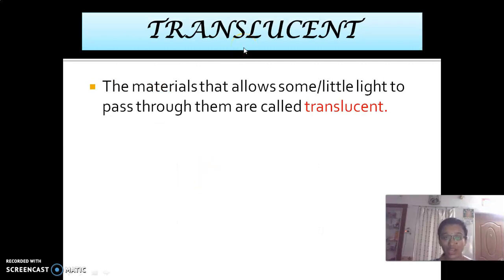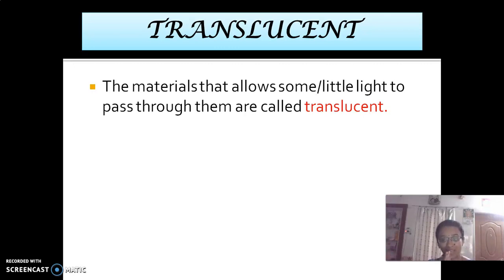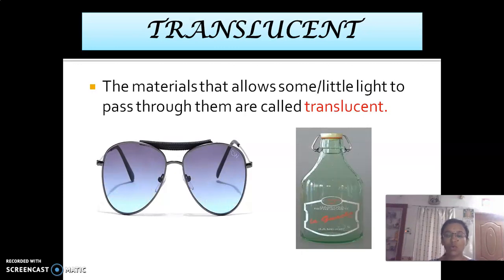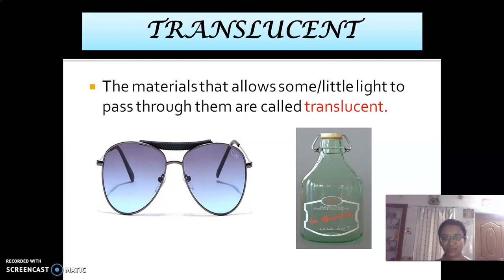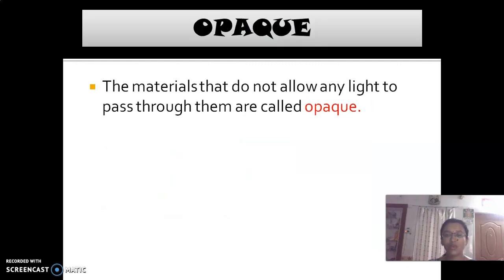The second type is translucent. These materials allow only some or a little light to pass through — they do not allow all the light through. A few light rays are reflected from the surface. Examples of translucent materials include sunglasses and soda bottles. Being on one side, we are not able to see the other side clearly — the image is diminished.